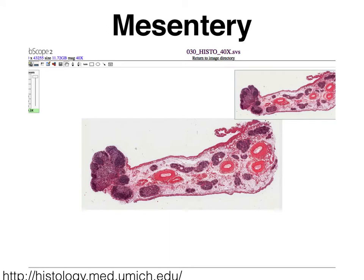To study the simple squamous epithelial tissue in mesothelium, we're going to take a look at a slide that is titled mesentery. Here we see a sliver of mesentery, which is really the structure that interconnects the many coils of the small intestine, for instance. It is very vascularized, which is why you see lots of reddish circles. And there are lots of little lymph nodules — these are the darker structures that you see. And amidst the blood vessels and the lymph nodules, we have quite a bit of fatty tissue.